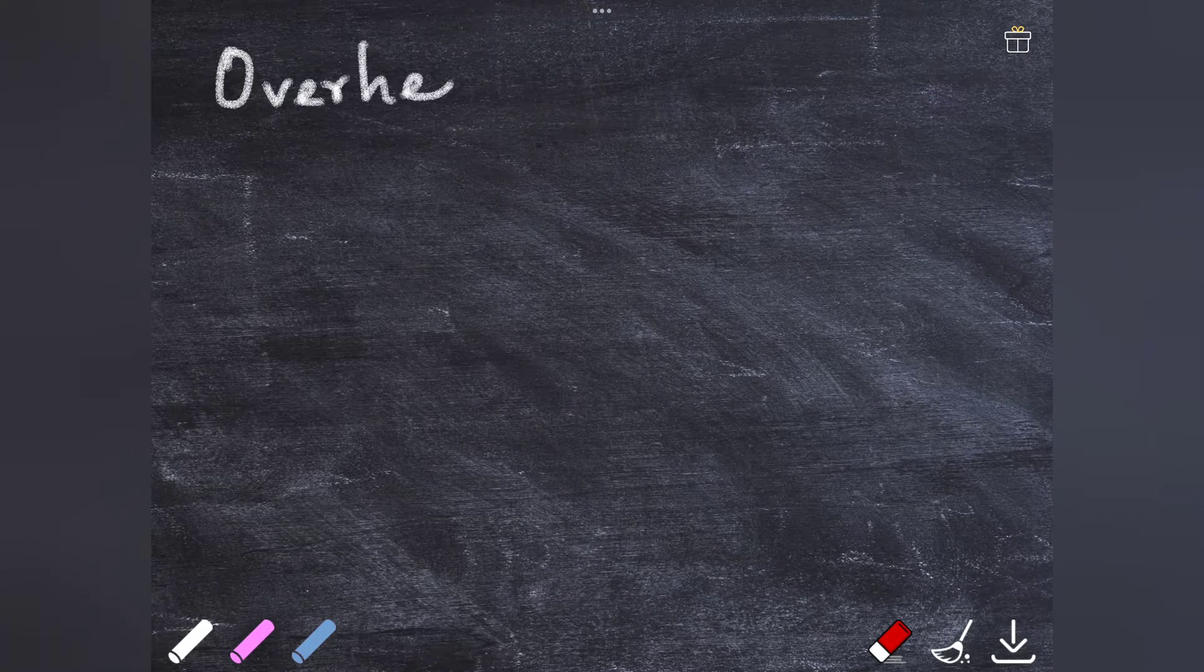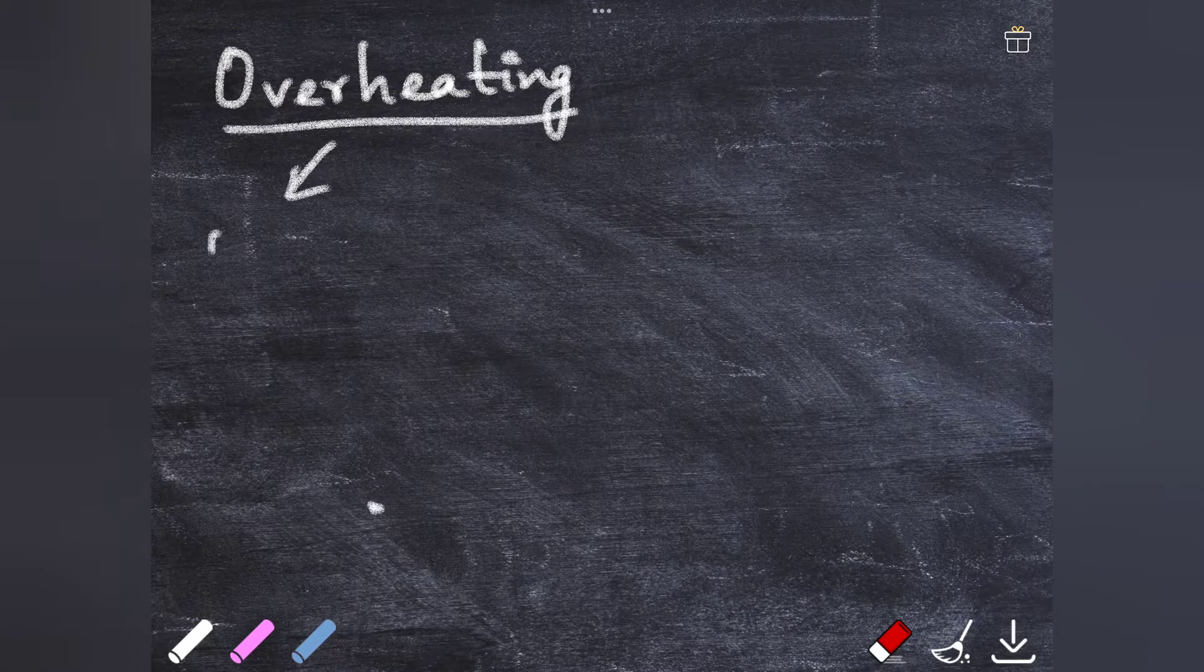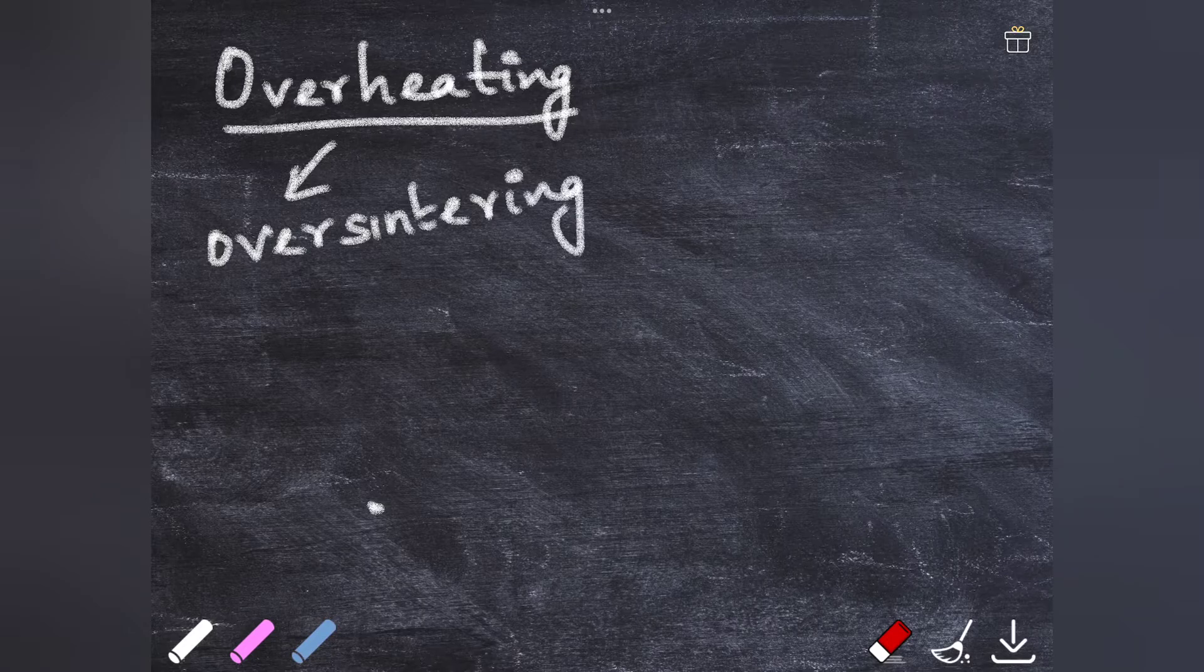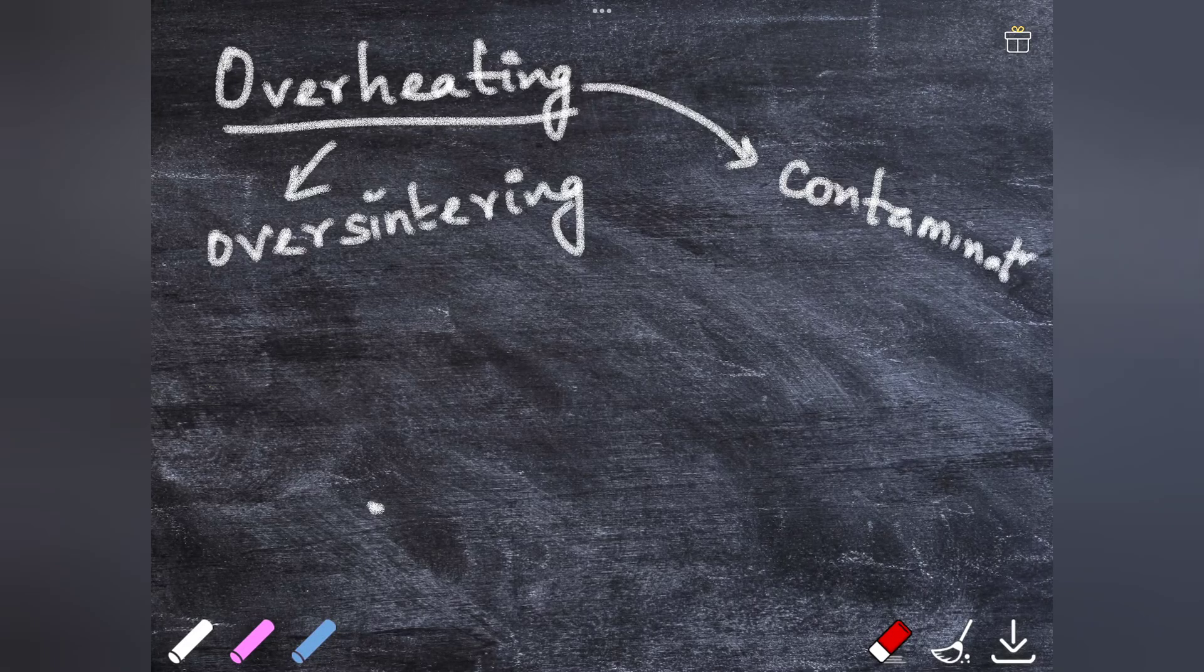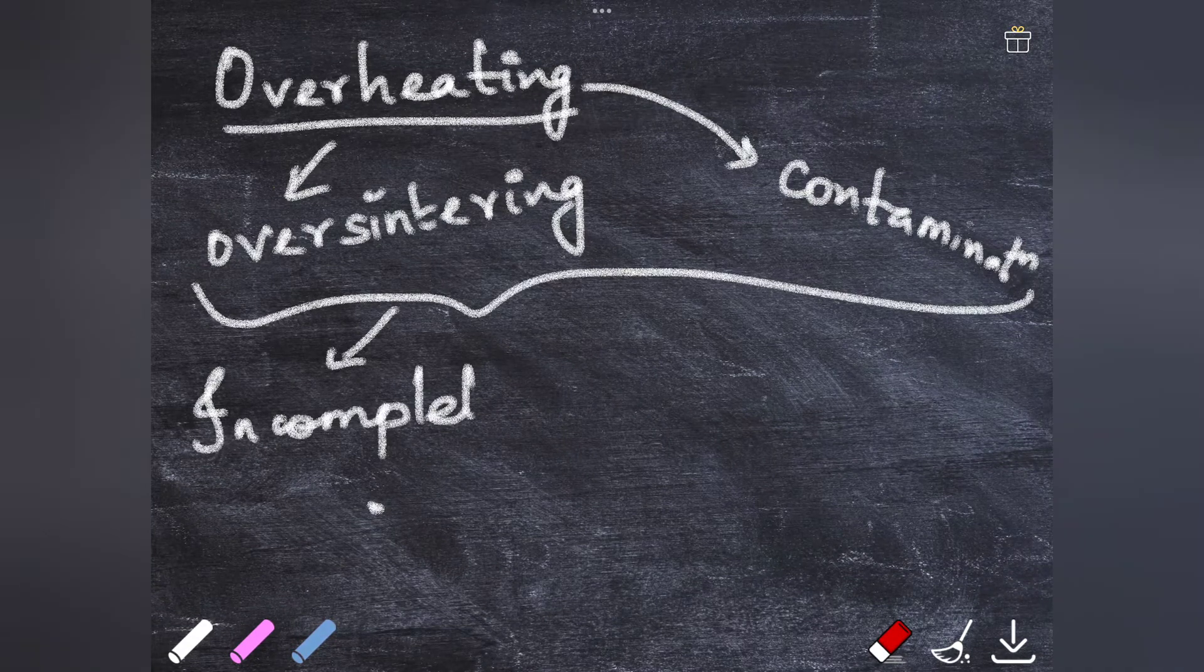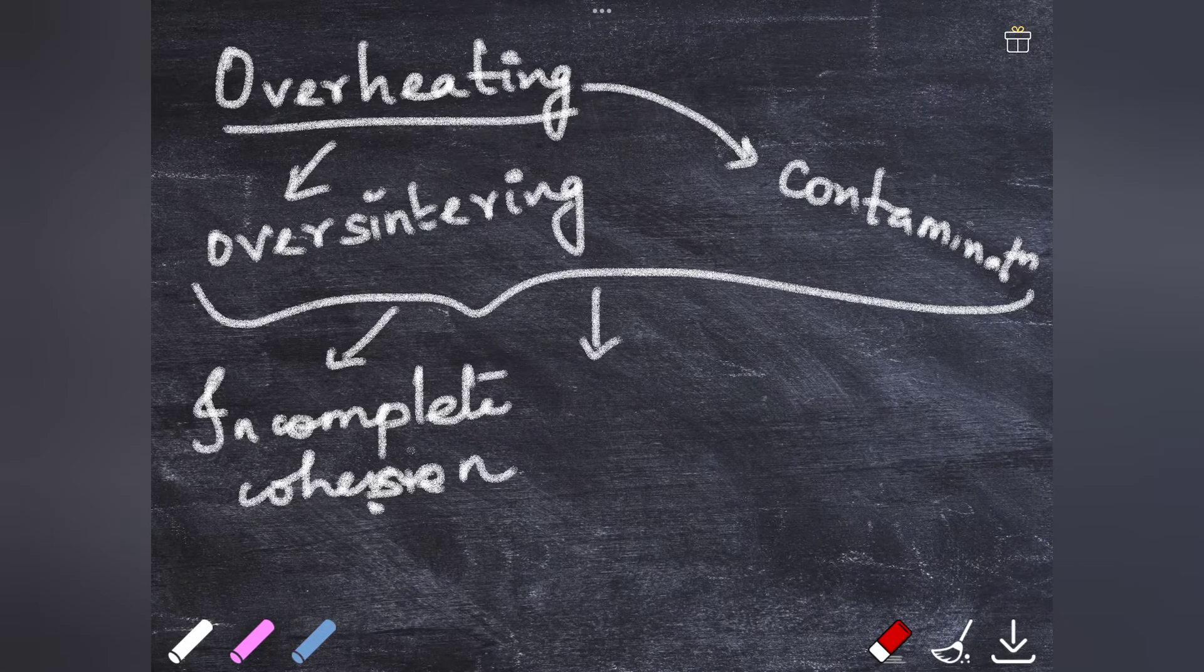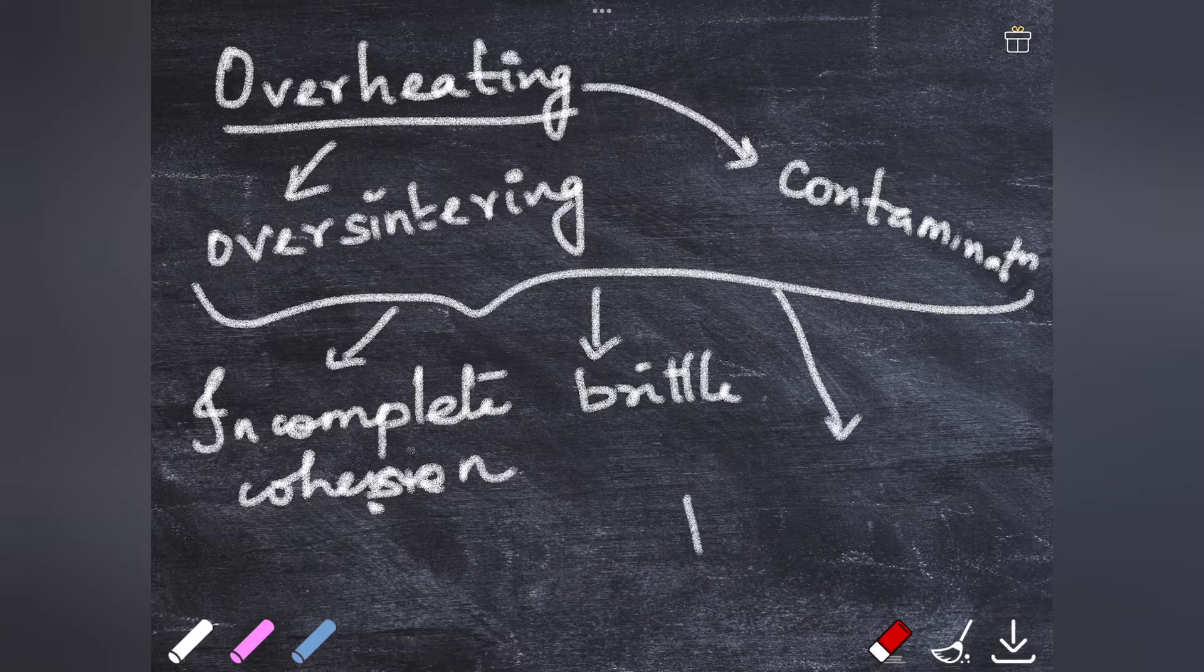Next, let's talk about what happens when you overheat the material. When you overheat it, it's going to cause over-centering or contamination from the tray, instrument, or even the flame. These things will eventually cause incomplete adhesion or fusion of the gold pieces. It can make the final heated portion of the metal brittle and even cause poor compaction characteristics, making the material unsuitable for restoration.